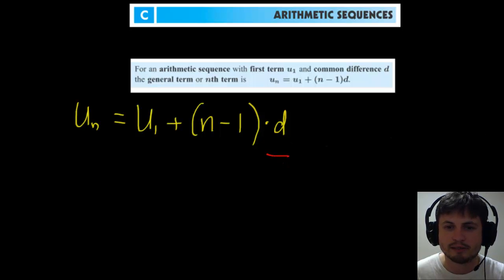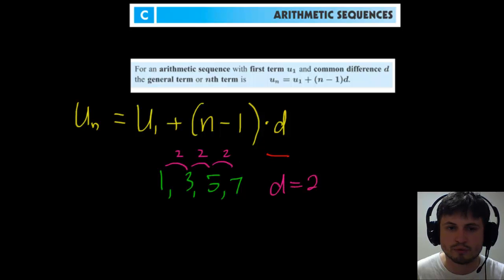For example, in the sequence 1, 3, 5, 7, these numbers differ by 2. So in this case, d equals 2. u1 in this case equals to 1.